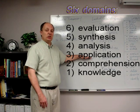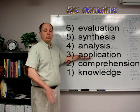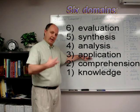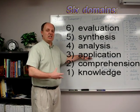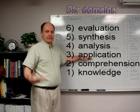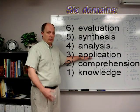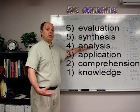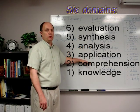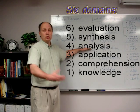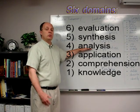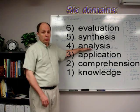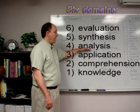The second level is comprehension. Not only do I know that Abe Lincoln was president during the Civil War, but I can comprehend it — I can understand it, I can put it in context. That means something to me. The third level is then application: I can apply what I've learned through knowledge and comprehension to a new situation, such as taking theories we learn in psychology and applying them to a new situation.